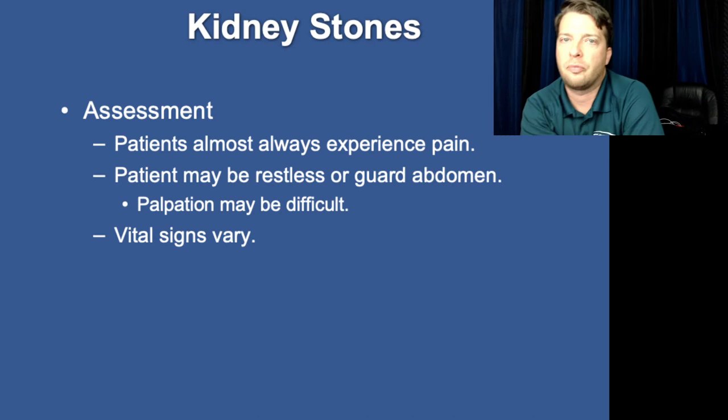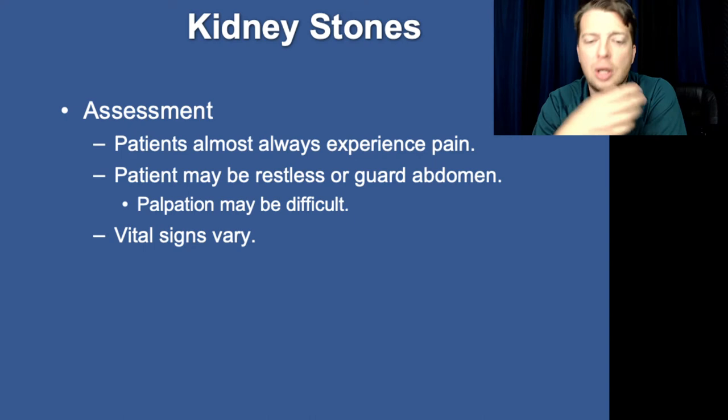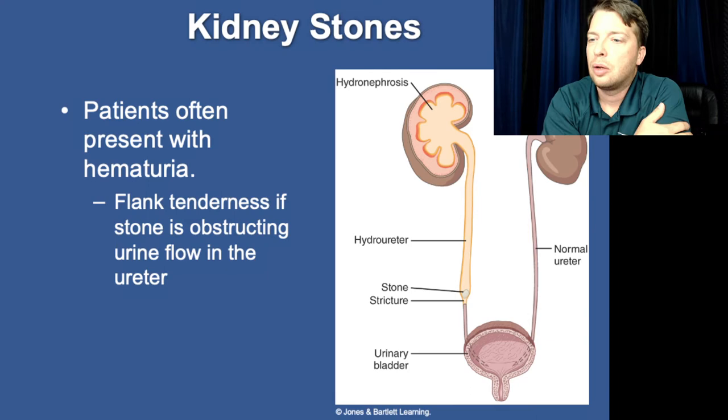Classic sign of presentation of kidney stones is the patient will complain of back pain — that's the early symptom. You may get dispatched for a complaint of abdominal pain, and they'll say the pain started in my back and then kind of moved around to the front and down low. That is your kidney stone — that is the kidney stone following the ureter from the kidney down to the bladder.